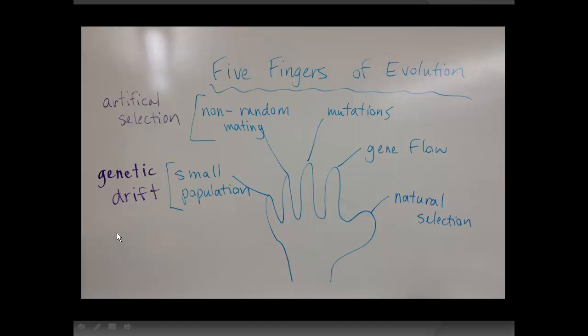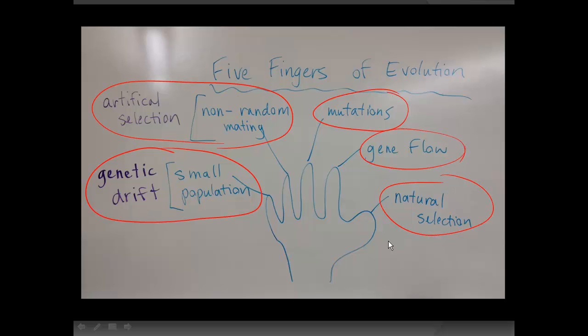Now this is the original thing that I posted on the whiteboard, the Five Fingers of Evolution. So we've got genetic drift with small populations, artificial selection representing non-random mating, mutations, gene flow, and of course natural selection, which has to do with adaptations and fitness of organisms, which we're going to talk a little bit further about in the following classes.